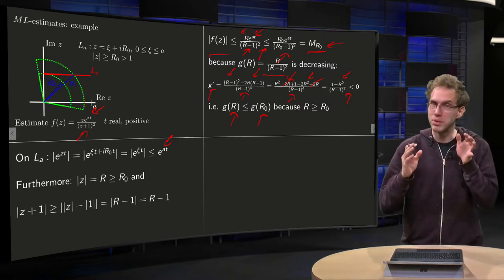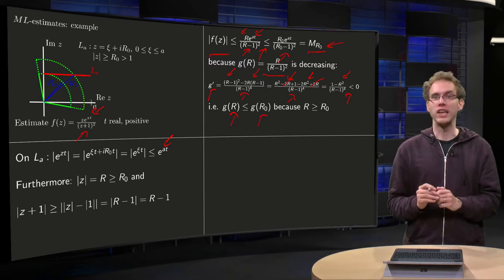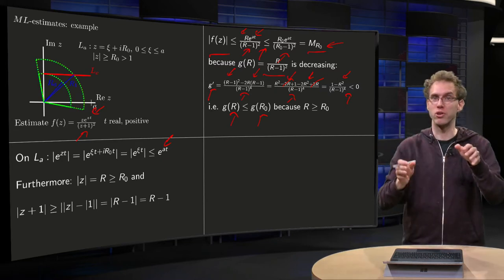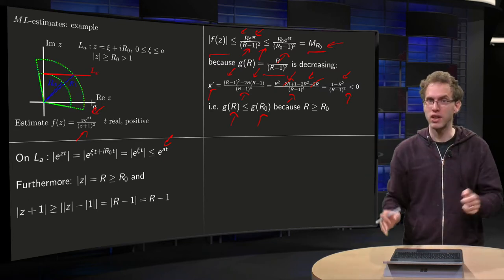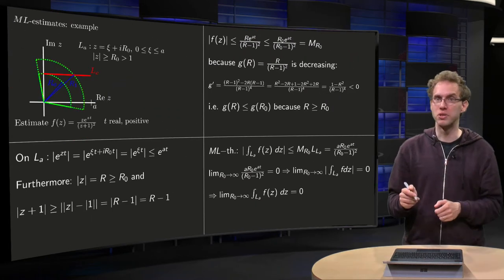So that's why your estimate on f(z) works. Estimating f(z), that was the hard part because we are not on a circle, so we really have to work hard to get this estimate working. But once we have that, we are happy because then we can use the ML theorem.